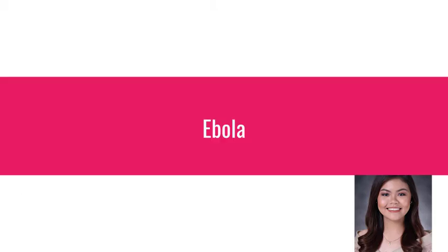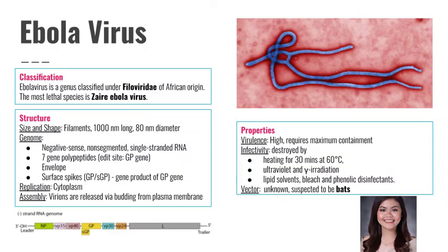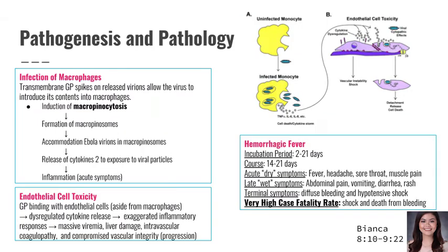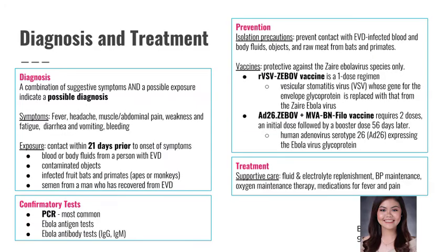Ebola virus is a genus classified under Filoviridae, and the most lethal species is the Zaire Ebola virus. Its genome has a single-stranded RNA, and the vector is suspected to be bats. Induction of macropinocytosis leads to release of cytokines and inflammation. GP binding with endothelial cells leads to exaggerated inflammatory responses. Hemorrhagic fever has a very high case fatality rate due to shock and death from bleeding. Confirmatory tests include PCR or serological tests. Isolation precautions and vaccines are used for prevention.